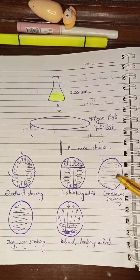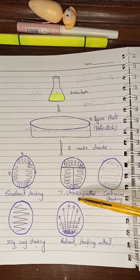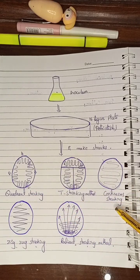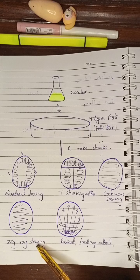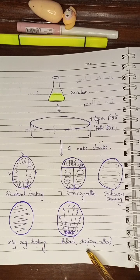We can also make other types of streaks like T streaking method, continuous streaking, zigzag streaking method, and radiant streaking method.